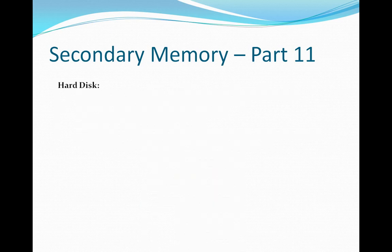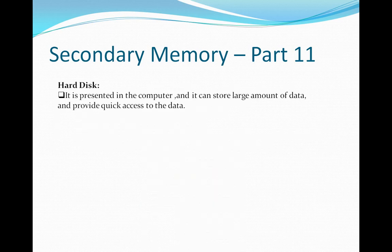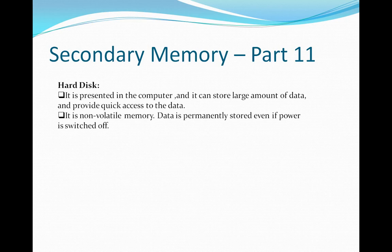Next is the hard disk, which is located inside the computer and can store a large amount of data. Storage started at 500 MB, then 1 GB, then 4 GB, and DVDs came into the picture. The hard disk provides quick access to data and is a non-volatile memory, meaning data is permanently stored even when the power is switched off.